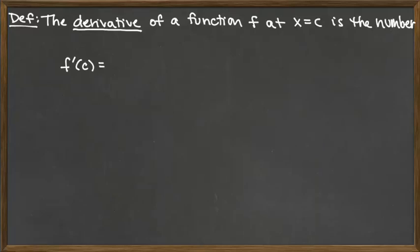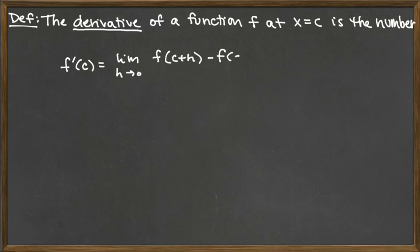The derivative of a function f at x equals c is a number, and we're going to denote that number by f prime of c. So we've got the derivative function, and we're going to plug in the x value c there, and what we get is the limit as h approaches 0 of f of c plus h minus f of c, all over h.